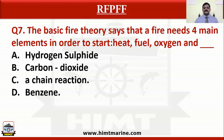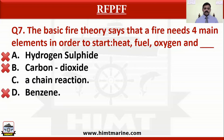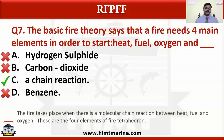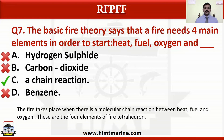The basic fire theory says that a fire needs four main elements in order to start: heat, fuel, oxygen, and dash. Option A hydrogen sulfide, option B carbon dioxide, option C a chain reaction, option D benzene. The correct answer is a chain reaction. Fire takes place when there is a molecular chain reaction between heat, fuel, and oxygen — these are the four elements of the fire tetrahedron.